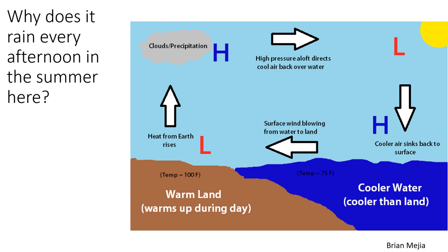Because land and water have different specific heat capacities, they warm up at different rates. Land that's near water often has a temperature difference between the land and the adjacent water. This is especially important in coastal locations or in regions near lakes, where you can experience weather conditions influenced by water being a different temperature than the land. A classic example we experience in Florida is sea breezes.